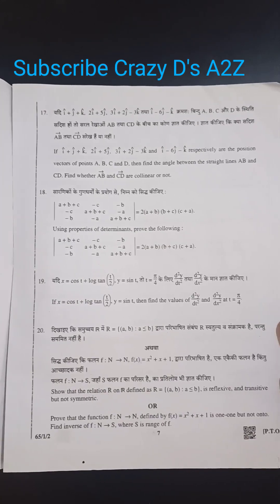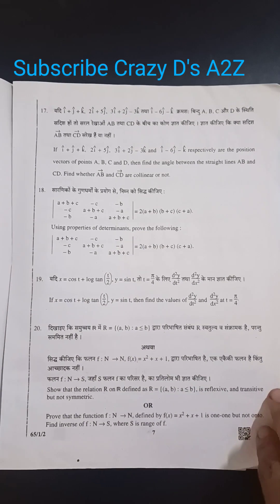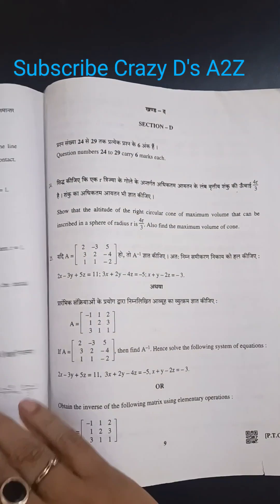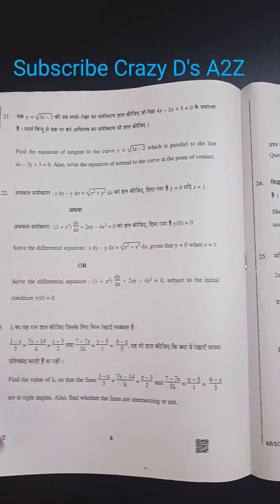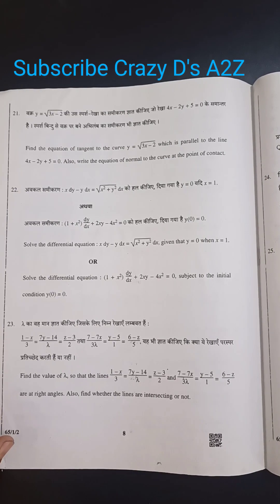This is how the paper looks like. And then comes the next section. Here the questions are from 21 to 23.